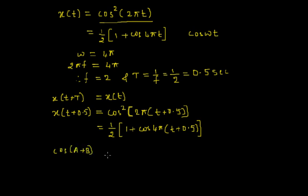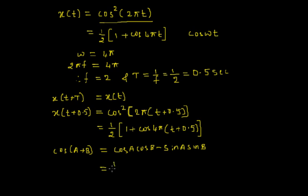We need to use the result cos(a + b) = cos(a)cos(b) − sin(a)sin(b). Using this result to expand cos(4π(t + 0.5)), we get ½(1 + cos(4πt)·cos(4π·0.5) − sin(4πt)·sin(4π·0.5)).